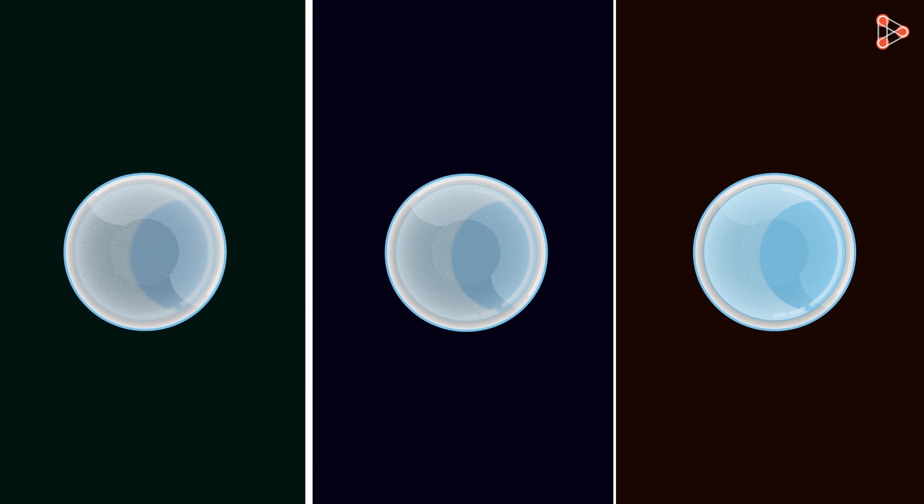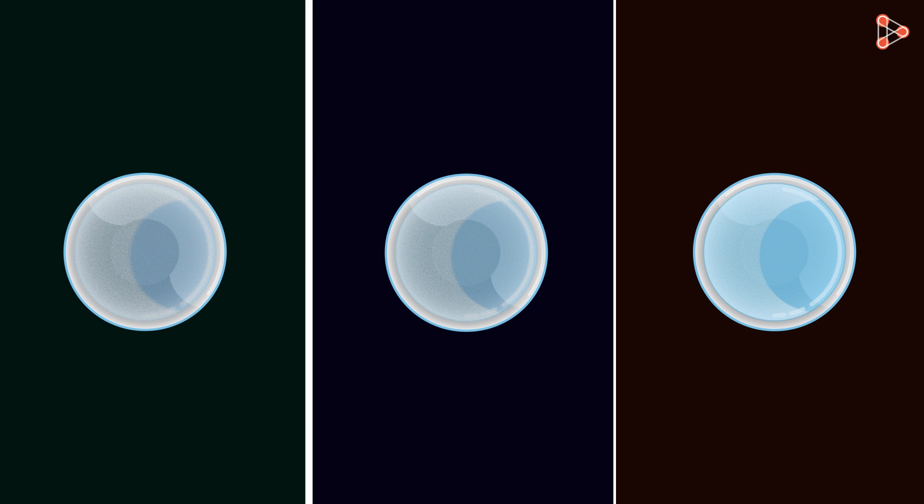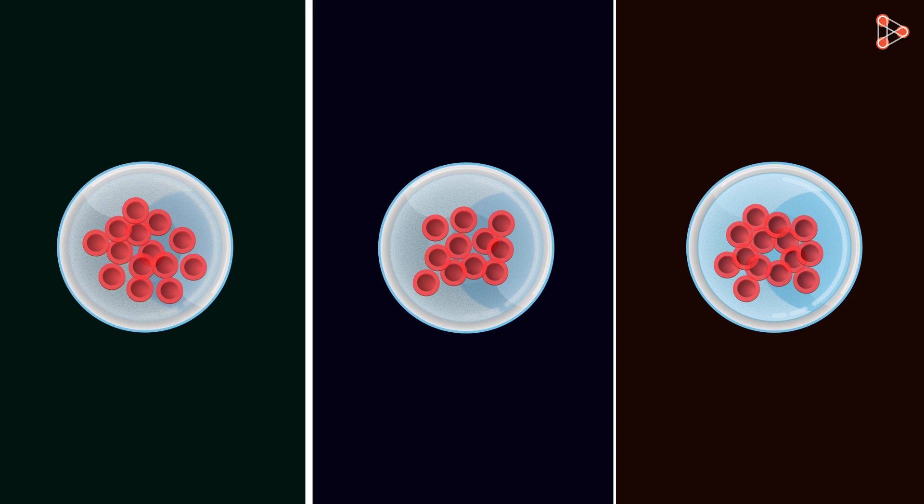Let's take three plates or containers with salt solutions of different concentration in each. Let's add a few red blood cells, i.e. RBCs, in each.